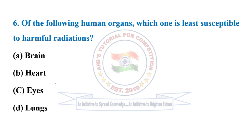Next question: of the following human organs, which one is least susceptible to harmful radiations? The correct option is option A — brain. The brain is likely to be least influenced by radiation.